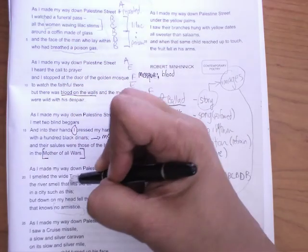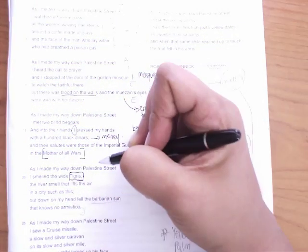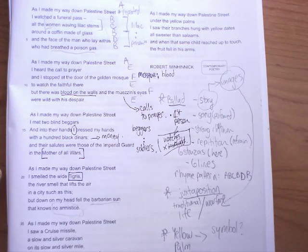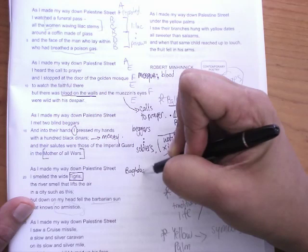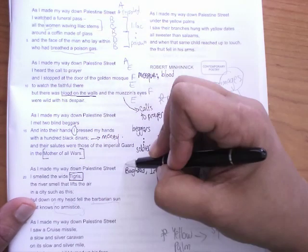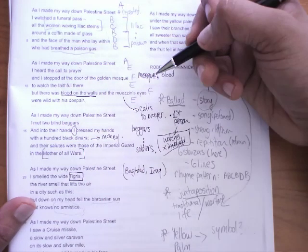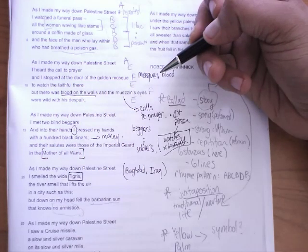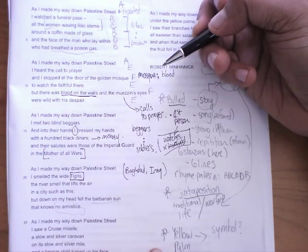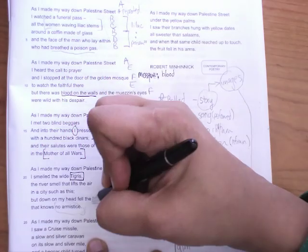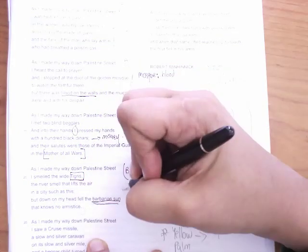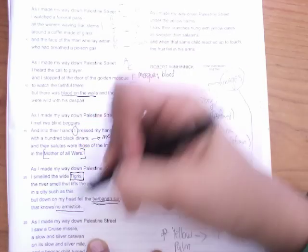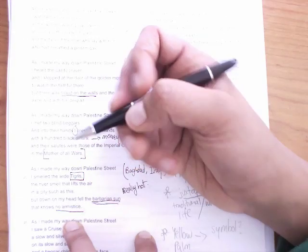The Tigris is what's supposed to give you the geographical clue. As I made my way down Palestine Street, a lot of students think this is a poem about Palestine in some way. However, actually, the Tigris is in Baghdad, in Iraq. And if you knew, for your geography students, that would be the tip-off. But if you didn't know already, the Palestine Street was in Iraq. So, smelling the river, and the smells in the air, but still, on his head, there's this barbarian sun, which I think is really hot. That's fine. But it knows no armistice.